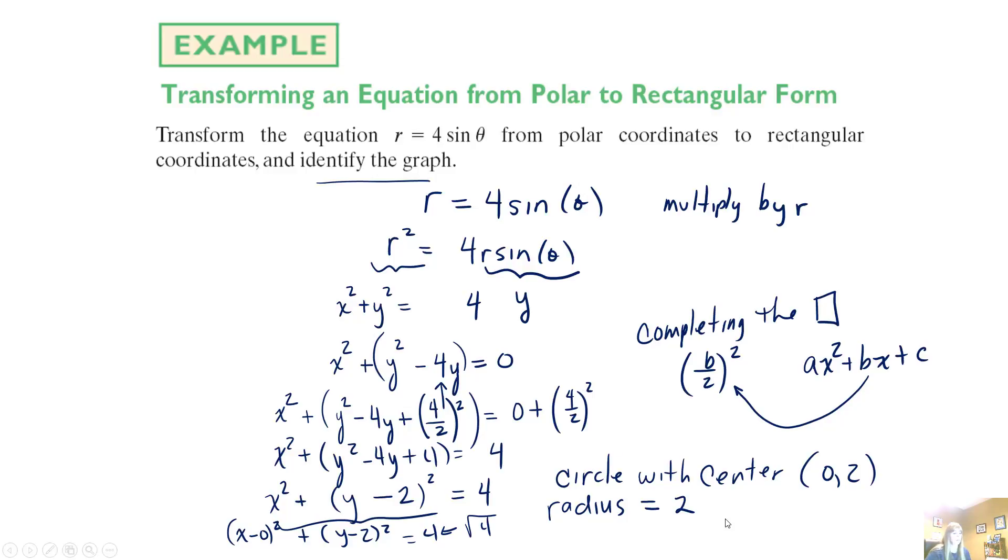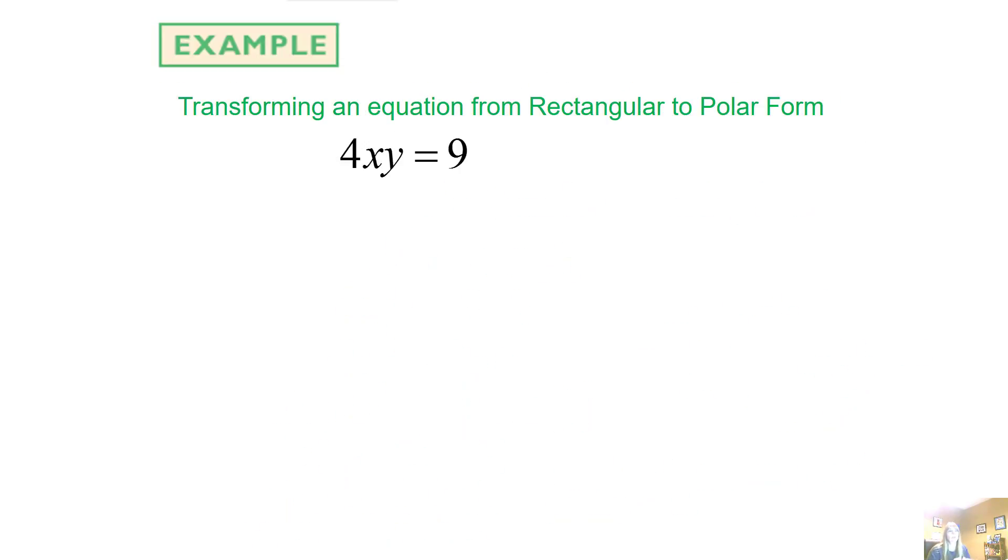So moving right along to the next example, transforming an equation from rectangular, now I know this is rectangular because I see an x and a y, to polar coordinates. So the first thing I'm going to do is I'll put over here on the side as a reminder, x equals r cosine theta. Could you please remove yourself?